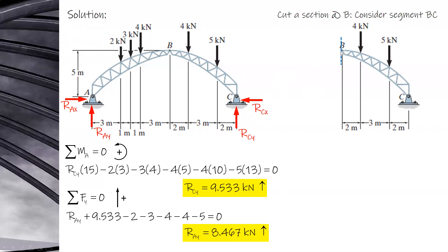Cut the section at B and you have these reactions. CY has been found as 9.533 kN. CX is still unknown. Since B is a hinge in this 3-hinged arc, the moment at B is zero.